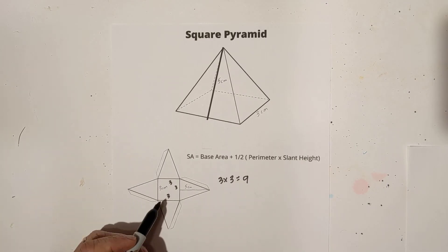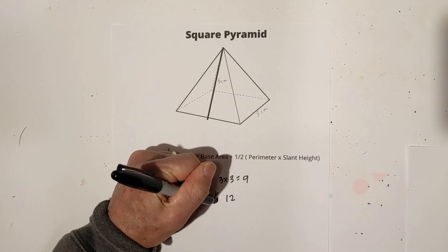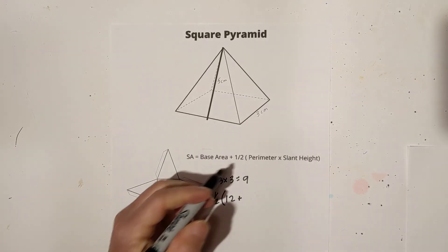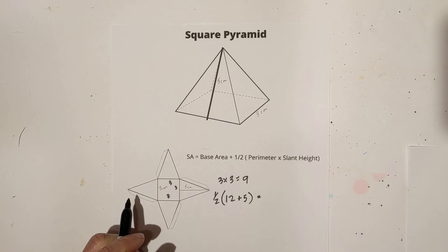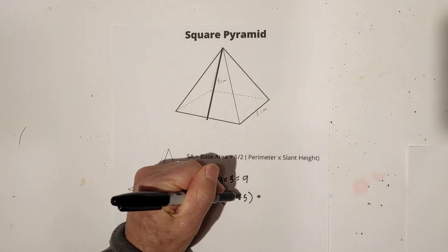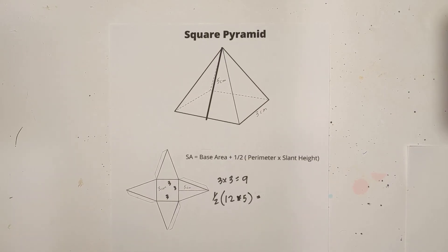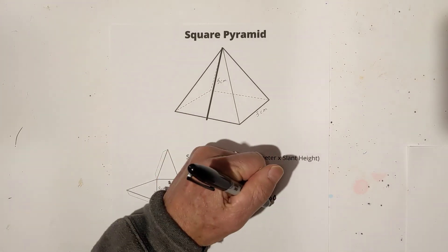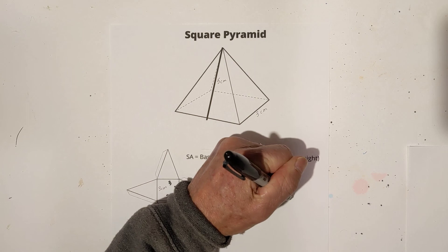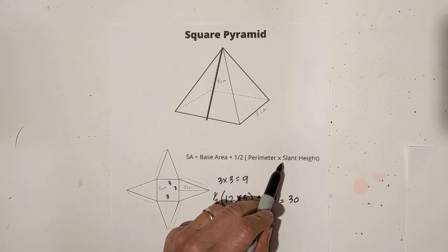Now we're going to add this to one half times the perimeter times slant height. Well, the perimeter is 12: three, six, nine, 12. So it's going to be one half times 12 times five. When you multiply 12 times five, that equals 60. And then if you divide this by two, that equals 30. So now you have the formula base area plus one half times perimeter times slant height.